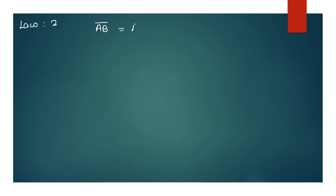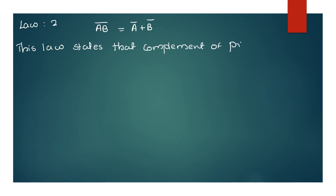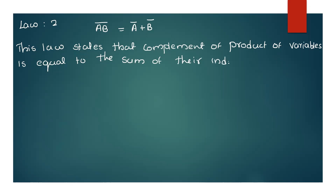Now this is the next law. Law 2: A B complement is equal to A complement plus B complement. This law states that on the left side the complement of the product of variables is equal to the sum of their individual complements.